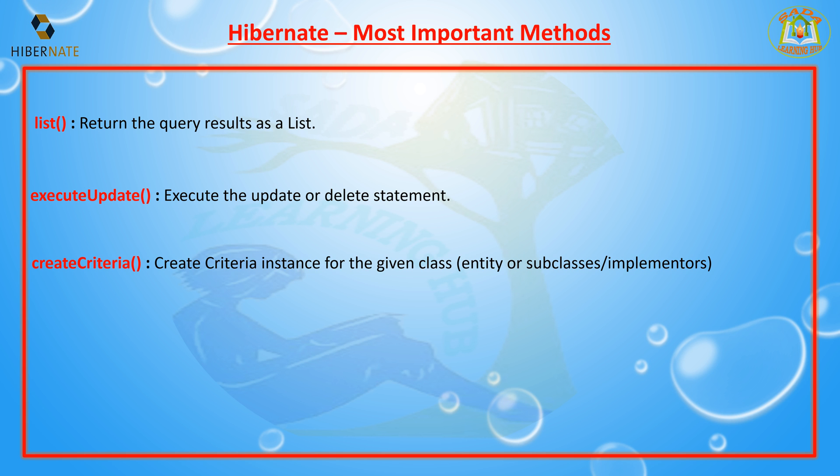The next method is createCriteria. createCriteria is used to create a criteria instance for a given class. Whenever you call createCriteria it returns the criteria instance.